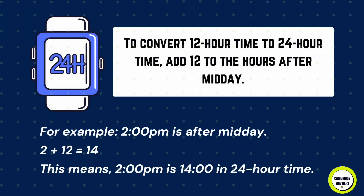To convert 12-hour time to 24-hour time, add 12 to the hours after midday. For example, 2 p.m. is after midday: 2 plus 12 equals 14, so 2 p.m. is 14:00 in 24-hour time.